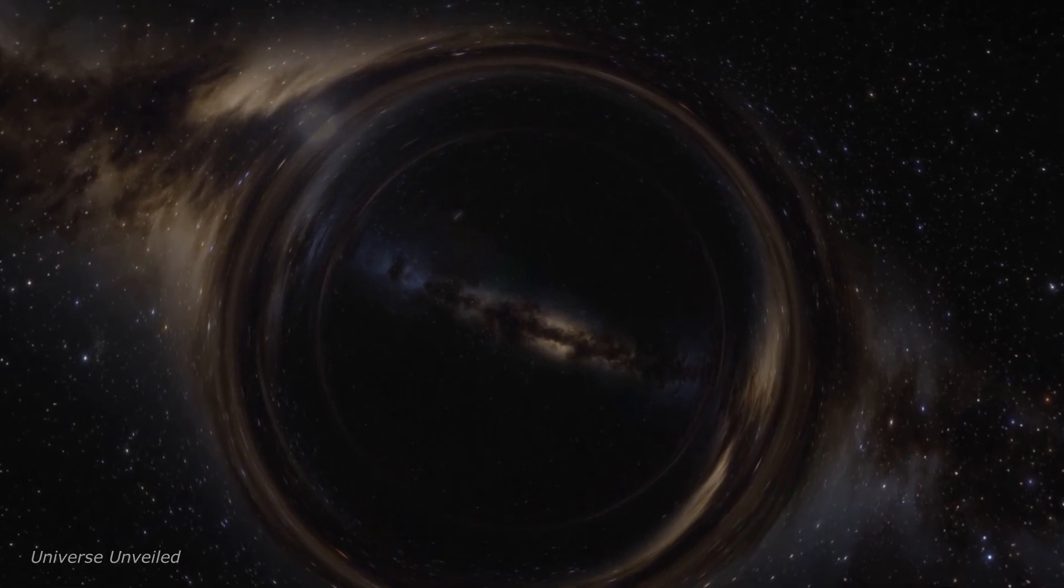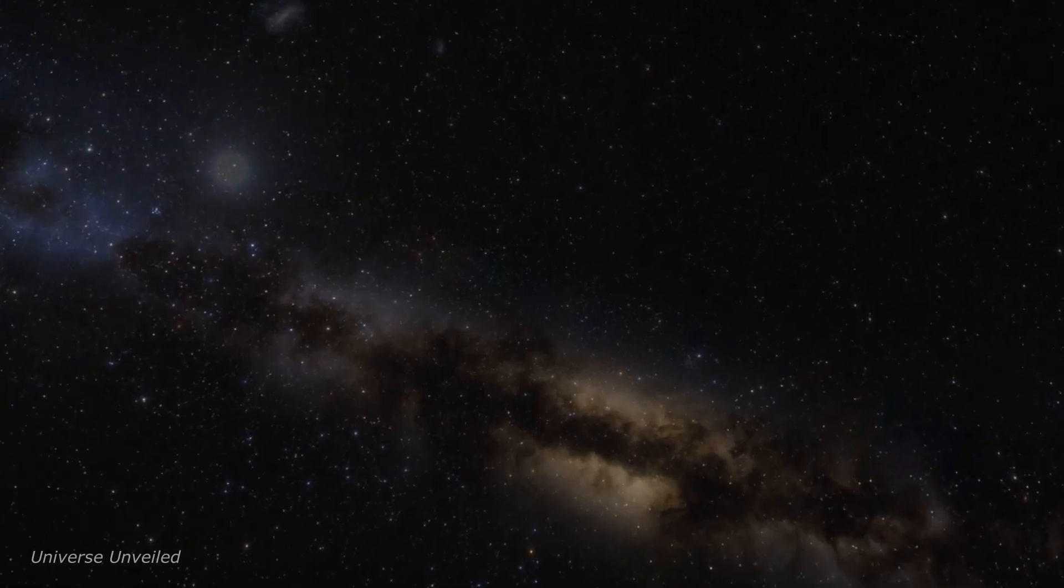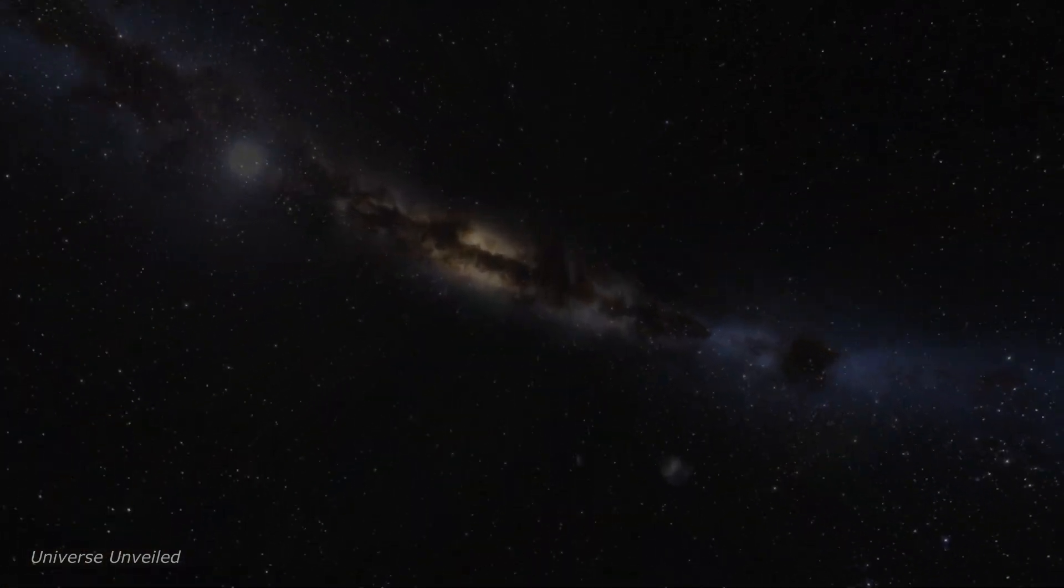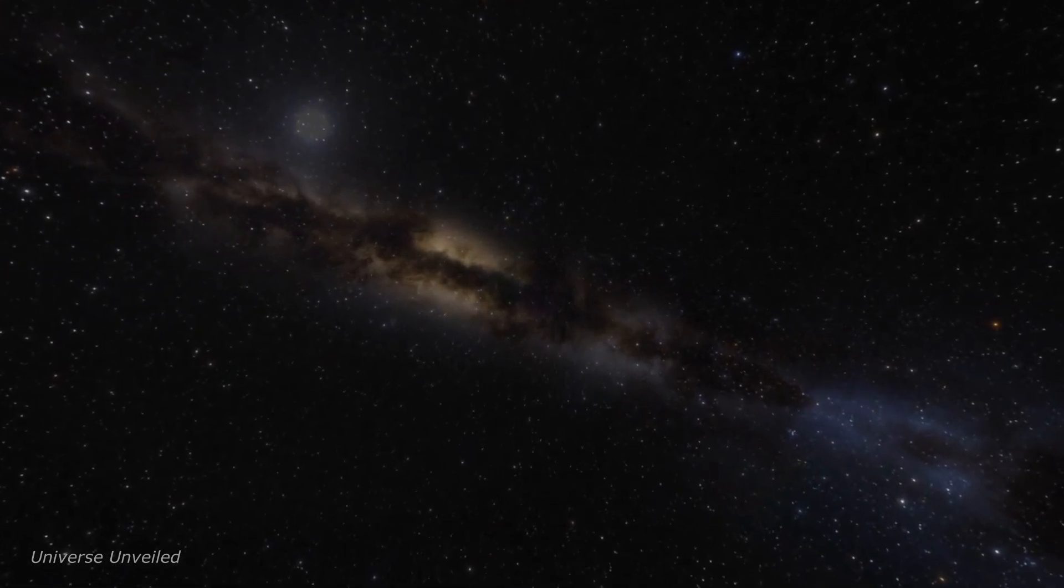The existence of supermassive black holes raises a fundamental question: How did these cosmic giants form in the first place? Several theories attempt to explain their formation. One theory suggests they formed from the collapse of massive clouds of gas and dust in the early universe. Another theory proposes that supermassive black holes formed from the mergers of smaller black holes.